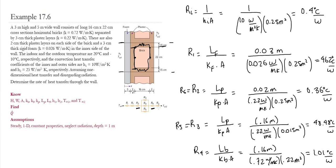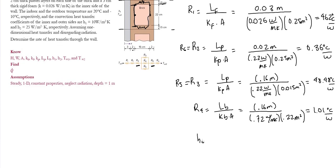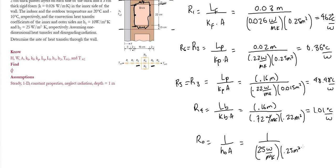The final resistance is R_o, the outer convection resistance, calculated as 1 over h_o times A. With h_o equal to 25 W/m²K and a cross-sectional area of 0.25 m², R_o equals 0.16°C/W.